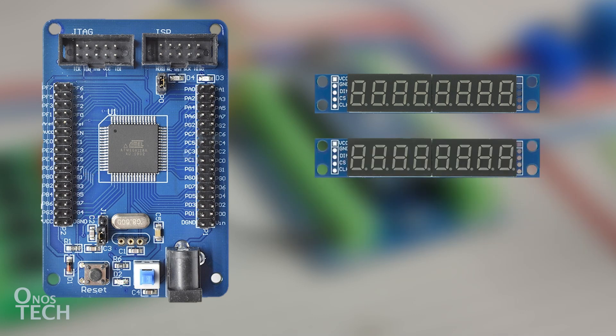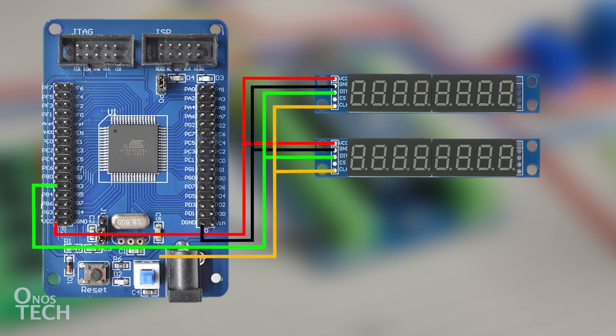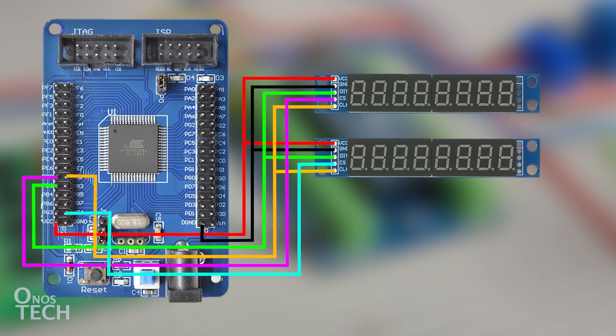Connect two 7-segment display models' VCC and GND to that of the Development Board. The DIN pin of the models connects to the MOSI pin of the board, which is PB2. The CLK pin of the models connects to the SCK pin of the board, which is PB1. The CS pin of the first model connects to B.1 of the board, which is PB0. The second display model's CS pin is then connected to pin B.2 of the Development Board, which is PG4.